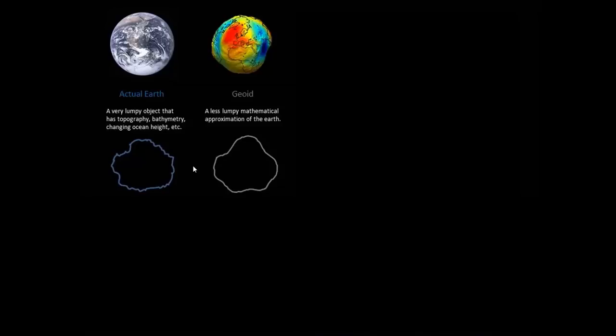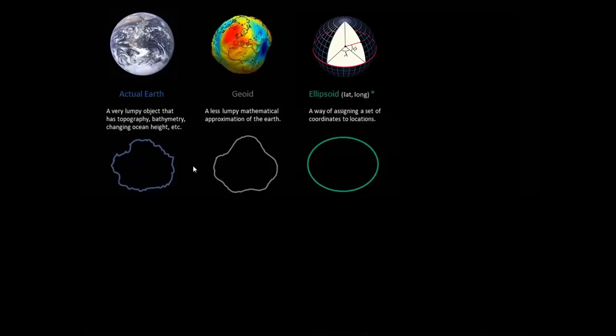But lucky for us, we don't actually have to deal with that because as cartographers and GIS practitioners, we still need a grid system. So the geoid isn't good enough because it's lumpy. We need a clean mathematical object, like an ellipsoid, to assign values of latitude and longitude so that we can actually locate things on the earth.